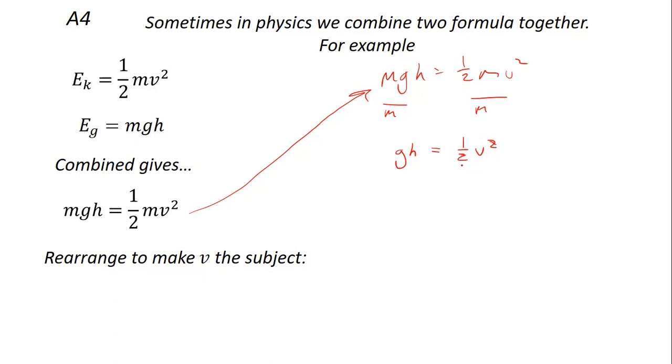I'm going to get rid of the times a half. Well, the opposite of times a half is times two. If I multiply both sides by two, it'll cancel that half there. So now I'm left with 2gh equals v squared. And then to get rid of the squared, I square root. I've got the square root of 2gh equals v. Three marks if you've got that.